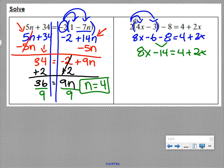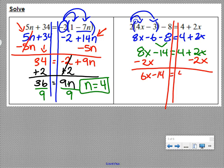Get your variables to one side. Undo the plus 2x with a minus 2x. You need those railroad tracks. Make sure you draw them in. We have 6x minus 14 equals 4.